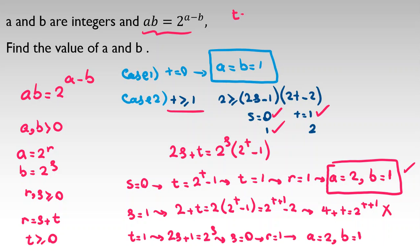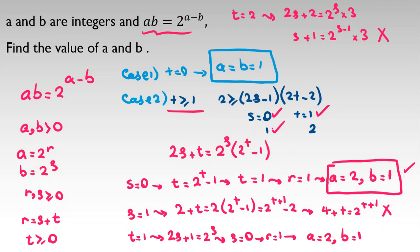For T=2: substituting gives 2S plus 2 equals 2 to the S times 3. Since S=0 and S=1 were already checked, S must be at least 2. Then S plus 1 equals 2 to the S minus 1 times 3. For S=2, left side is 3, right side is 6; for S=3, the right side grows faster. So no solutions here.